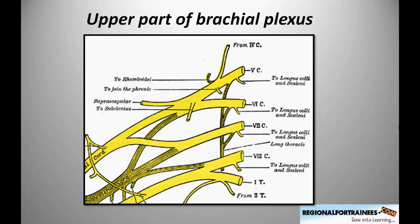Interestingly, we can also see a twig of C5 giving supply to the phrenic nerve. The phrenic nerve is not part of the brachial plexus — it is part of the cervical plexus, originating from C3, C4, and C5. However, it has implications when performing the interscalene block, which is why studying its anatomy is important in that context.